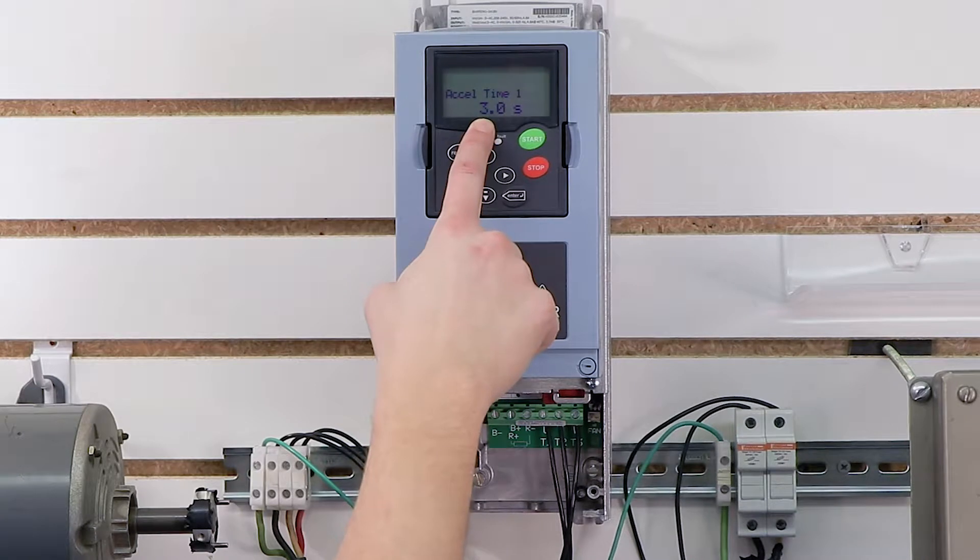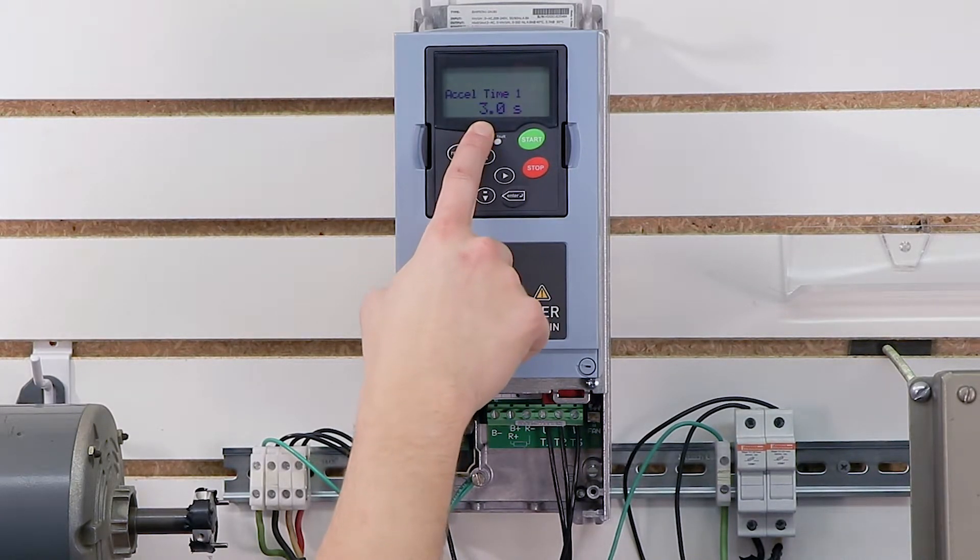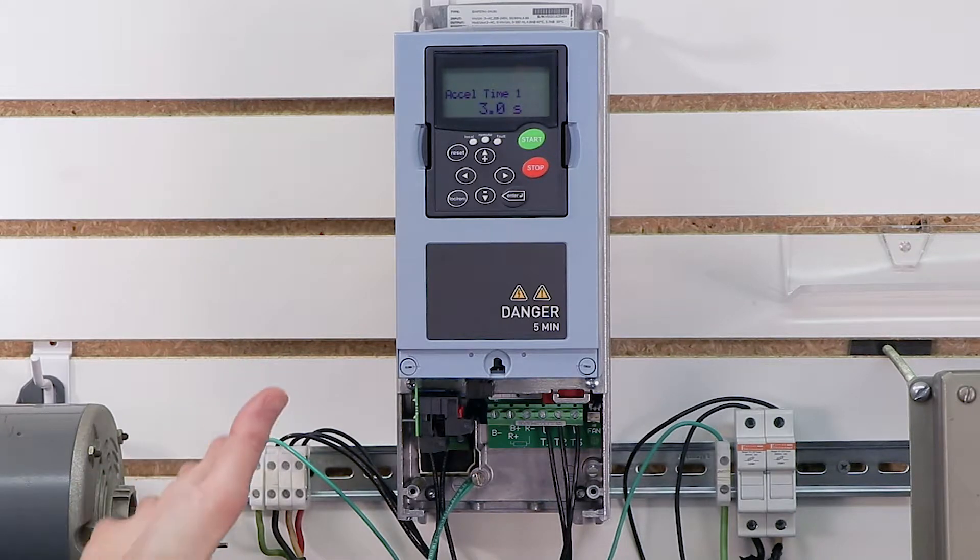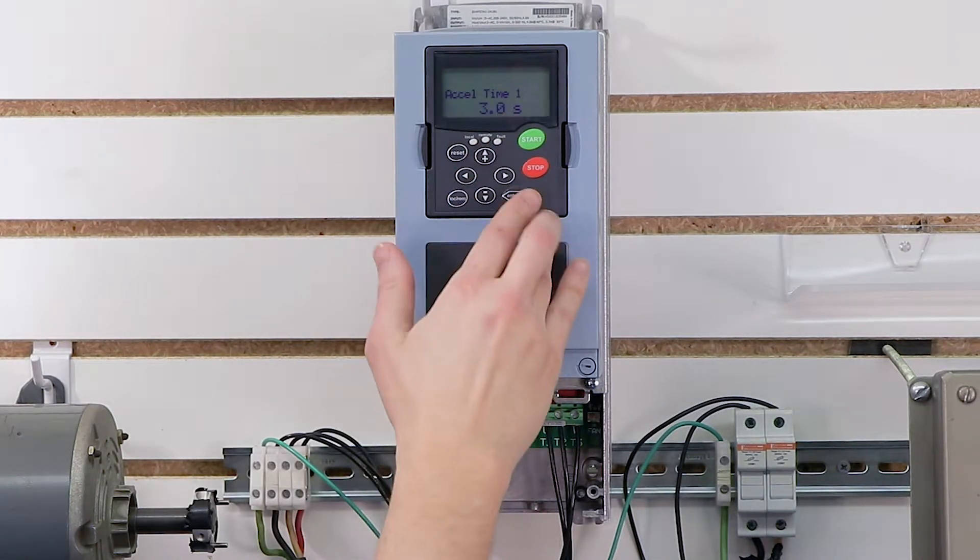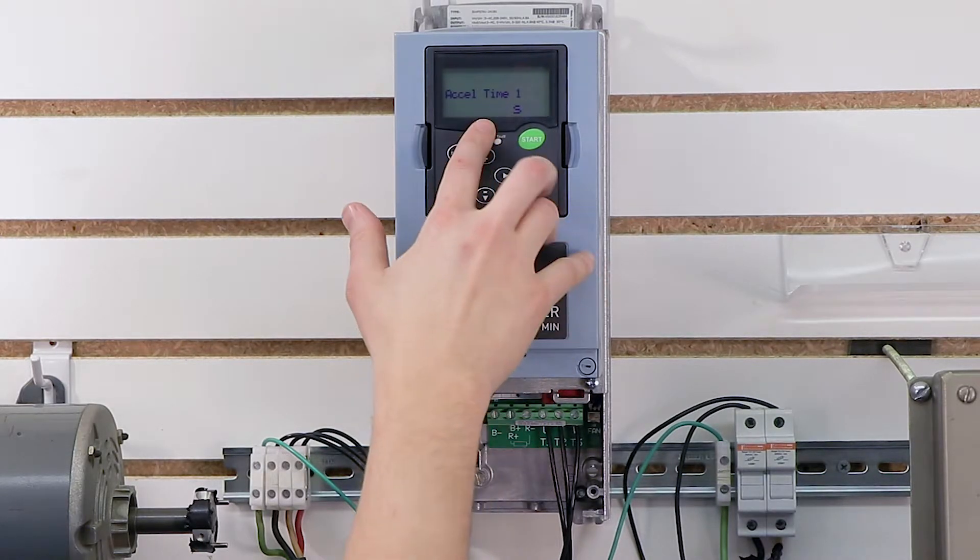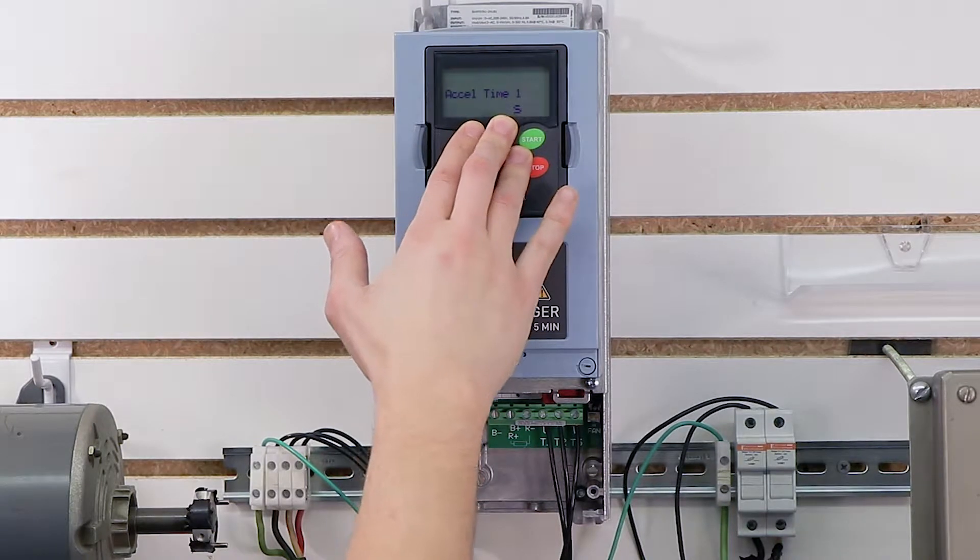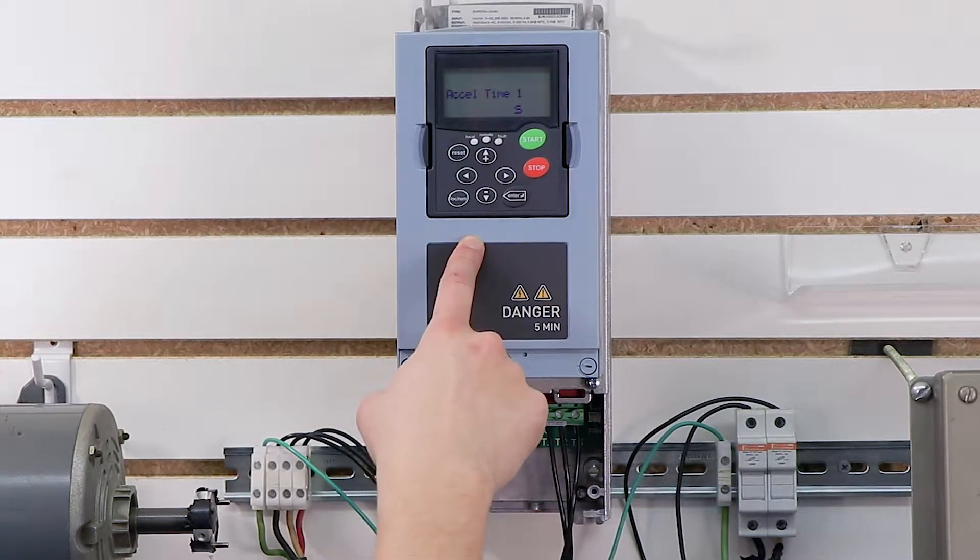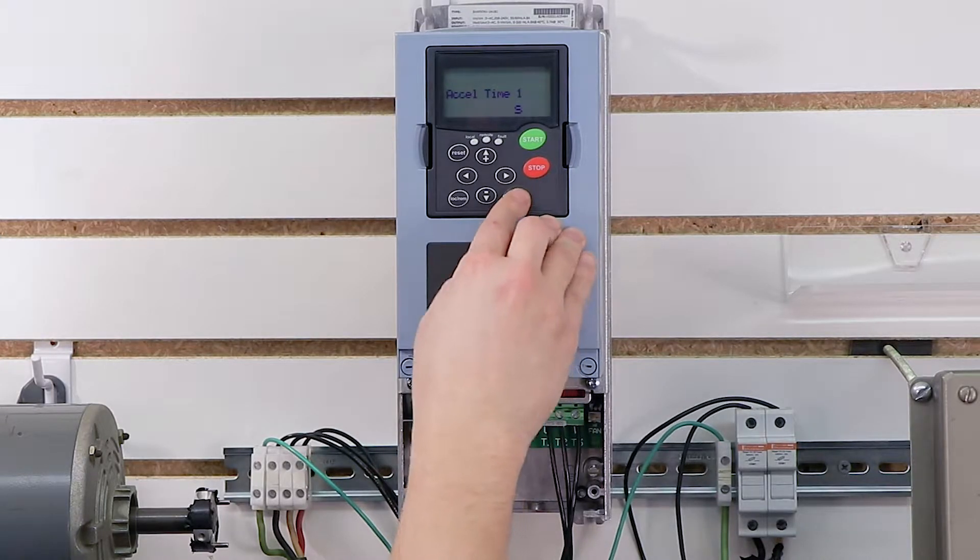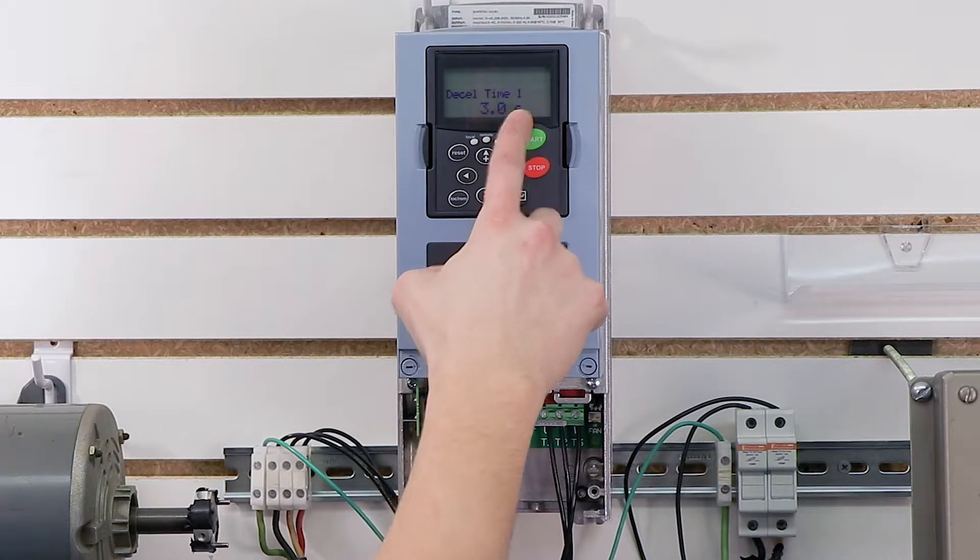For my acceleration time, the default is three seconds, which can be pretty aggressive for some applications. Obviously, I don't have my motor connected to a load, so three seconds is more than adequate. I could probably even do it faster. But for some people, if you're not sure how much of a load or how aggressive your load is, you can start this at a default 20 seconds or even 60 seconds just to see how your load responds. And you can always go in and change it later. So I'm going to press enter on three seconds for accel and then decel time comes up.